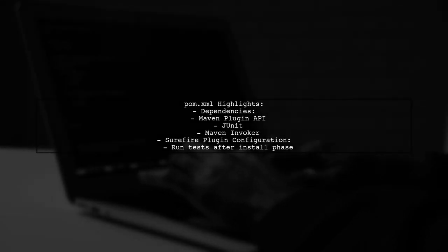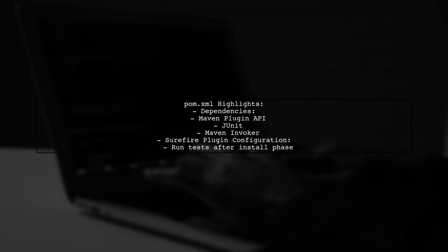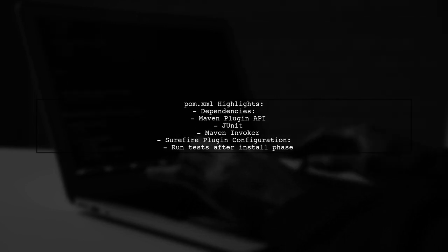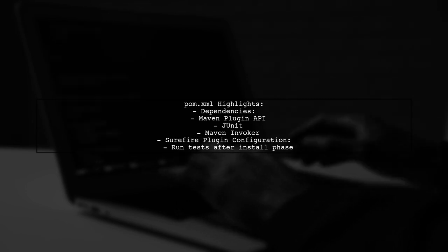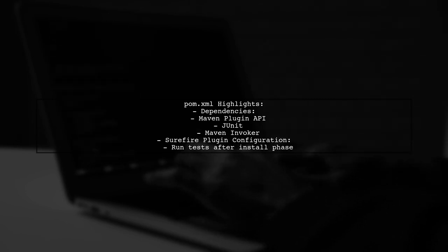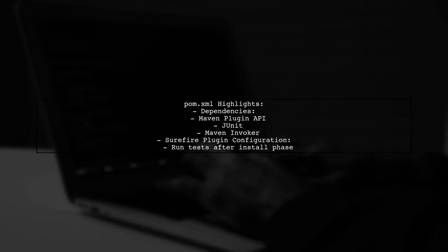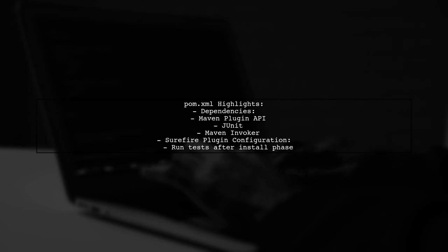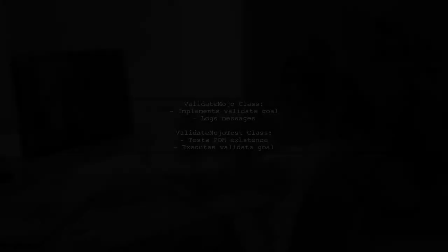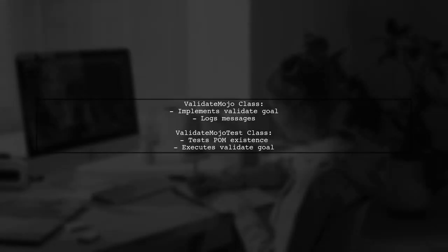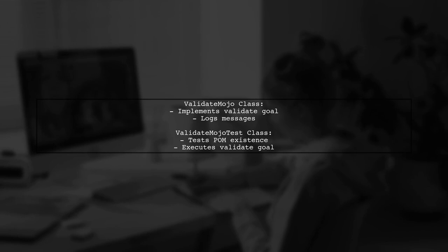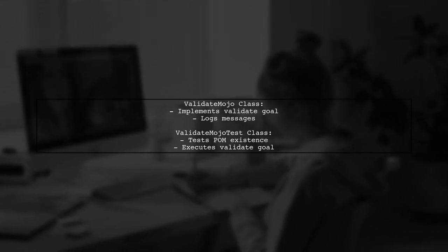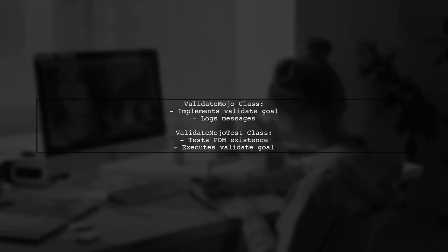The POM.xml configuration includes dependencies for Maven plugin API, JUnit, and Maven Invoker. The Surefire plugin is configured to run tests after the install phase. The ValidateMojo class implements the validate goal, logging messages during execution.